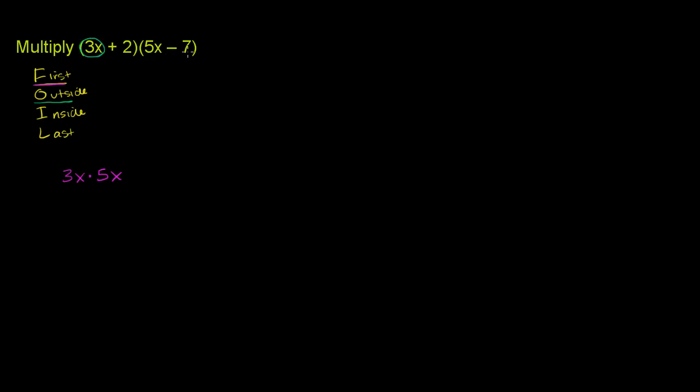we have 3x on the outside, and you have negative 7 on the outside. So that is plus 3x times negative 7. And then the inside terms here are 2 and 5x. So plus 2 times 5x.